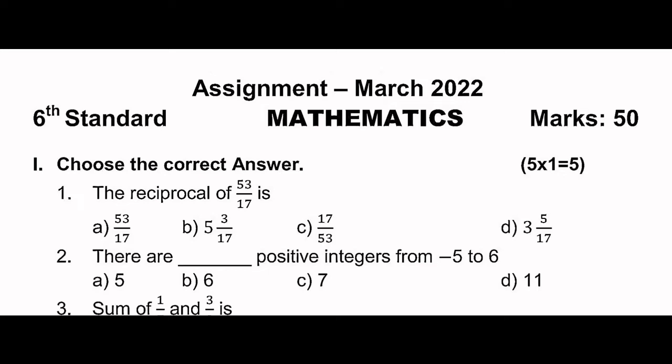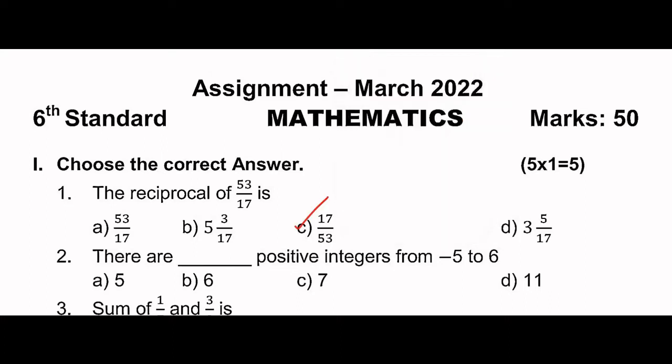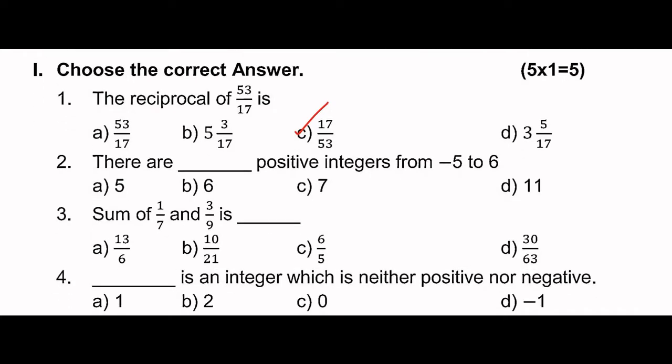Second question: There are dash positive integers from minus 5 to 6. From minus 5 to 6, how many positive integers are there? Positive integers are 1, 2, 3, 4, 5 - up to 5 we count positive integers. 6 is also counted, so from 1 to 6, considering all positive integers, the total count is 6.